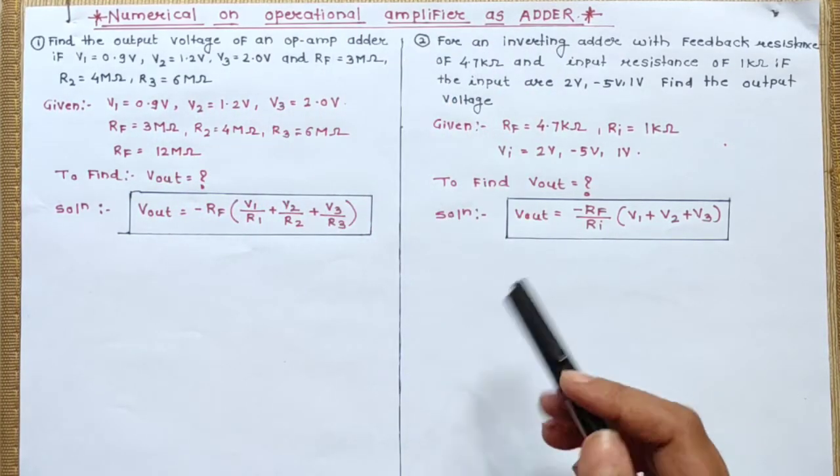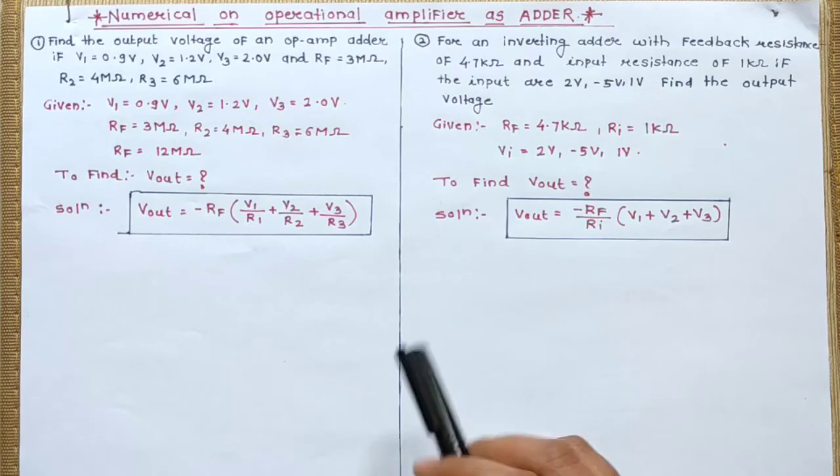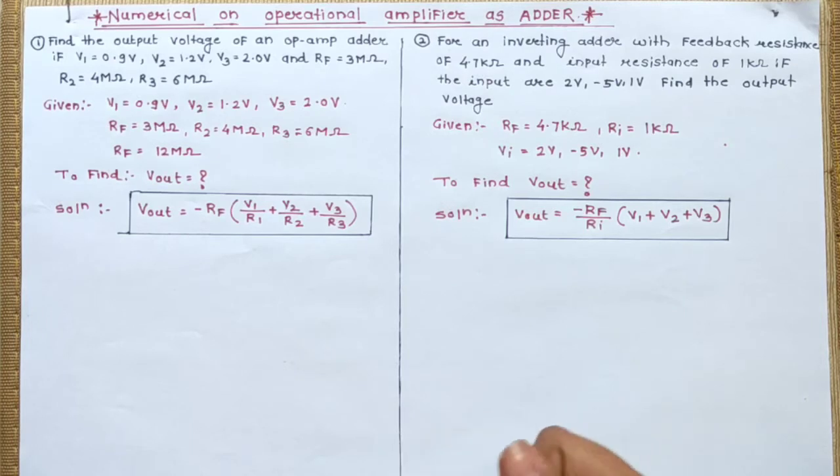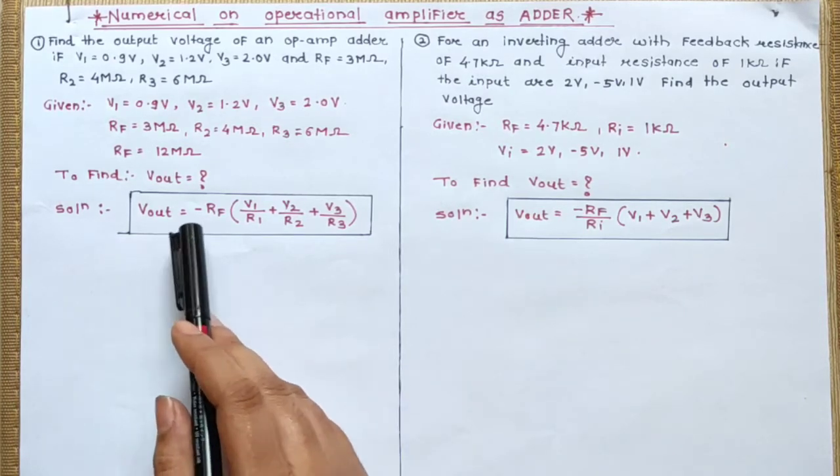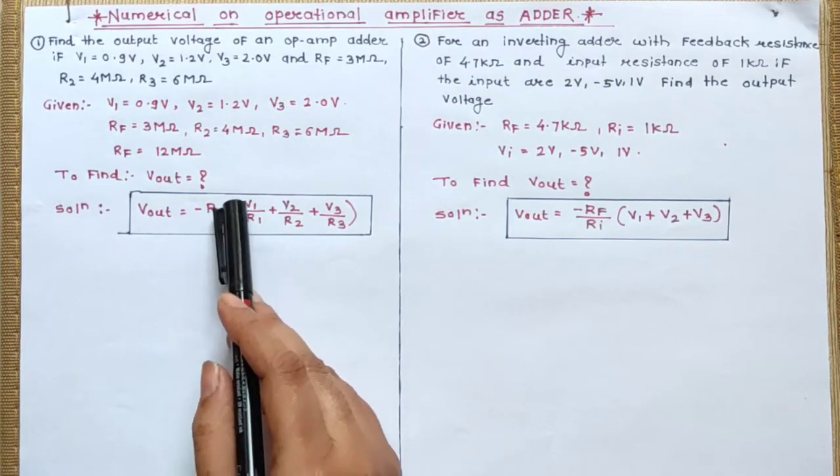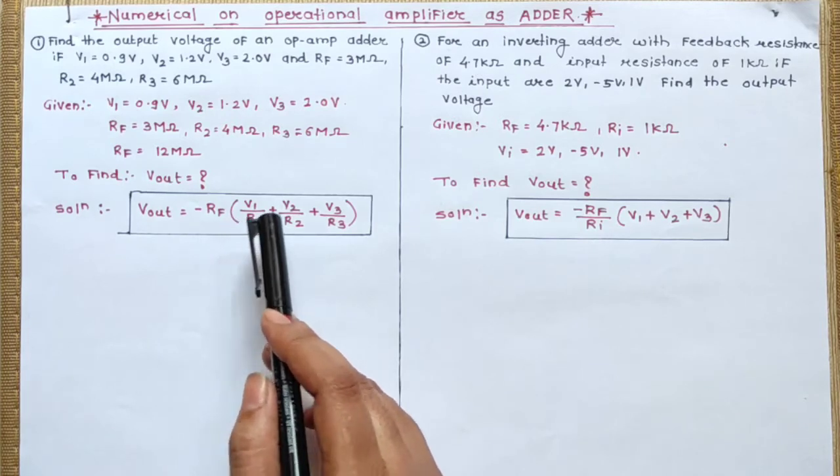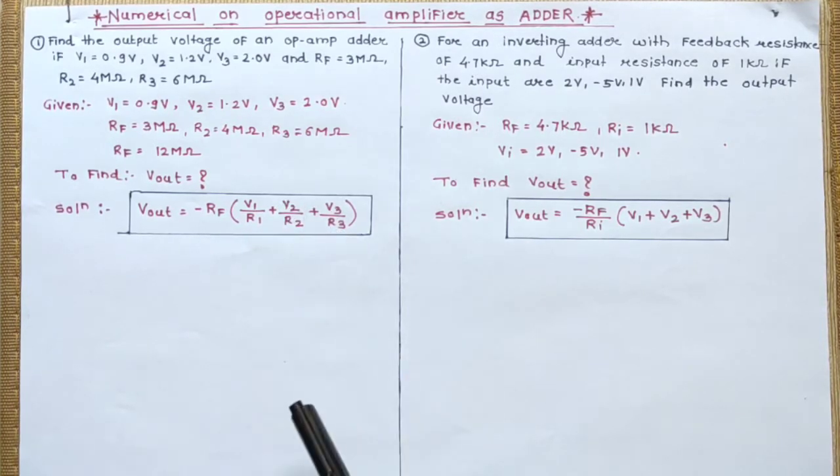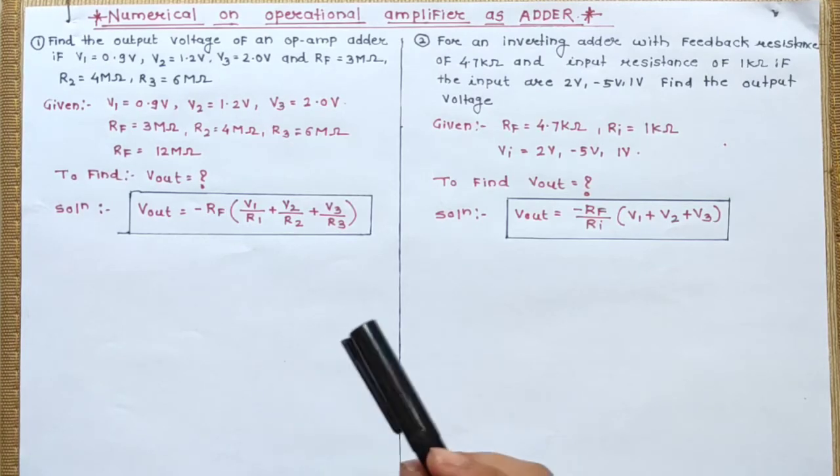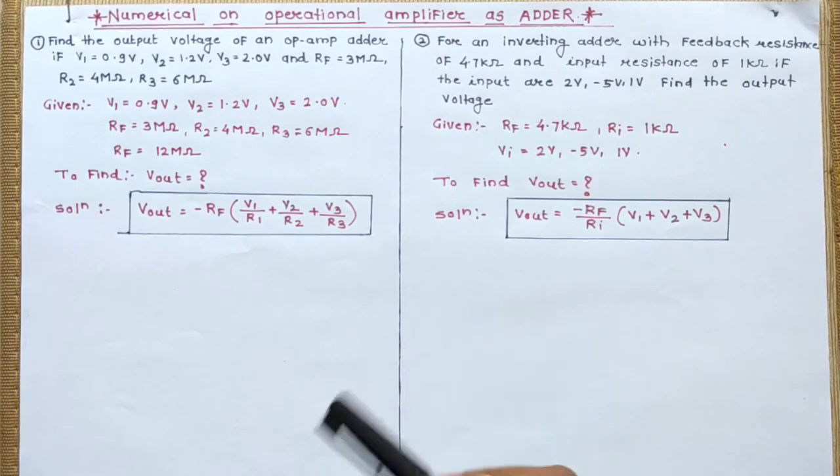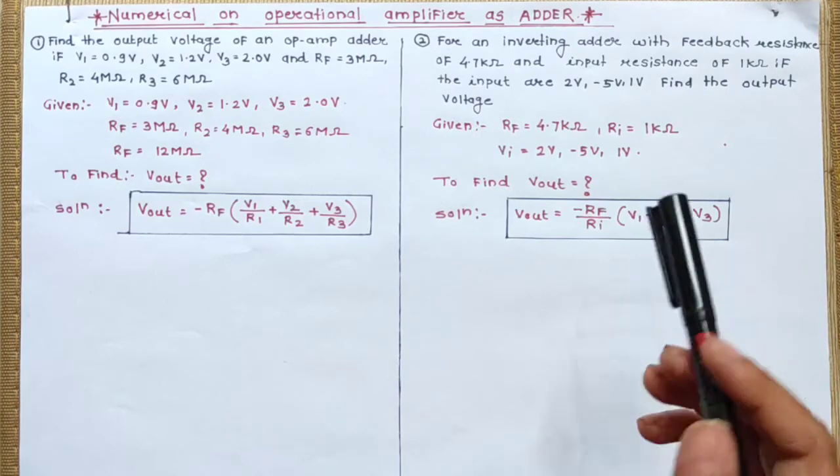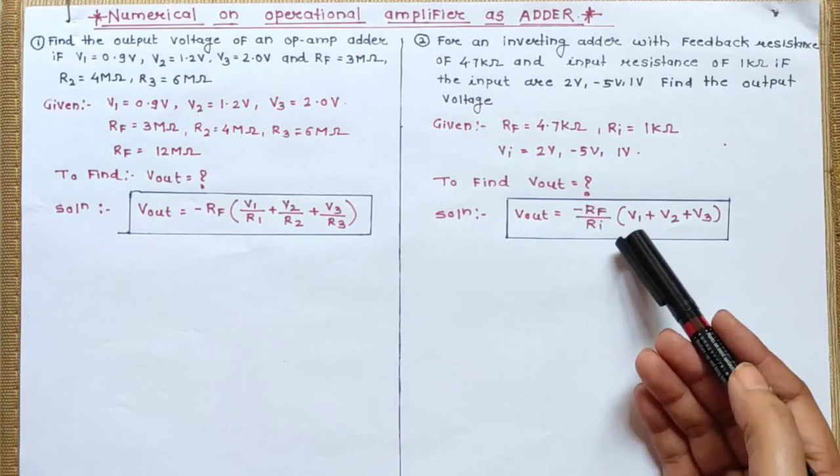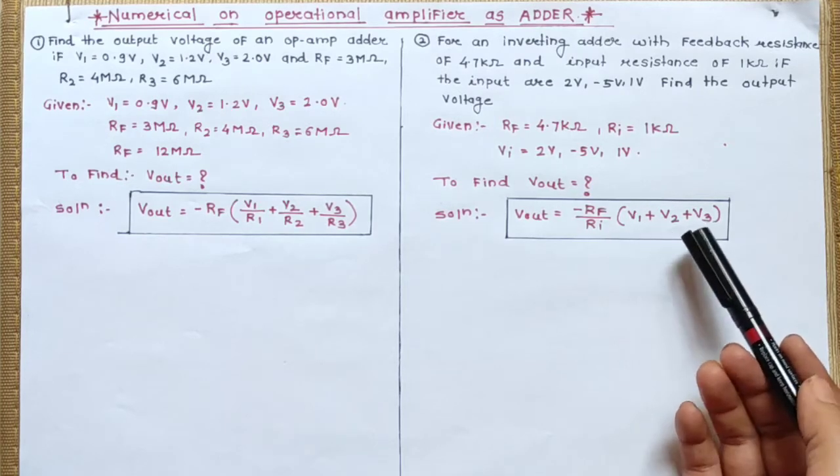Last video lecture we discussed the output expression for adder or inverting summing amplifier. It comes out to be Vout equals minus Rf in bracket V1 upon R1 plus V2 upon R2 plus V3 upon R3. When the value of R1, R2 and R3 is put as Ri, then the output expression becomes Vout equals minus Rf upon Ri in bracket V1 plus V2 plus V3.